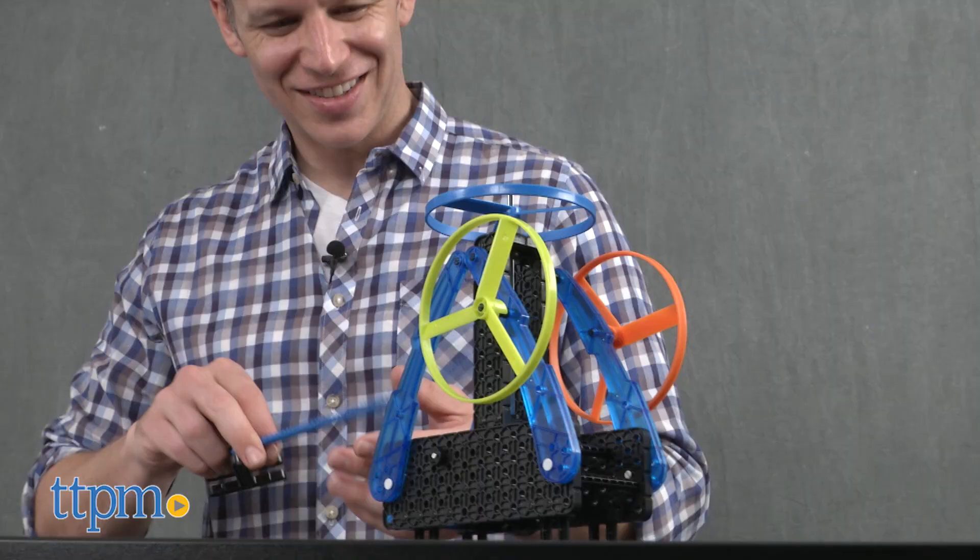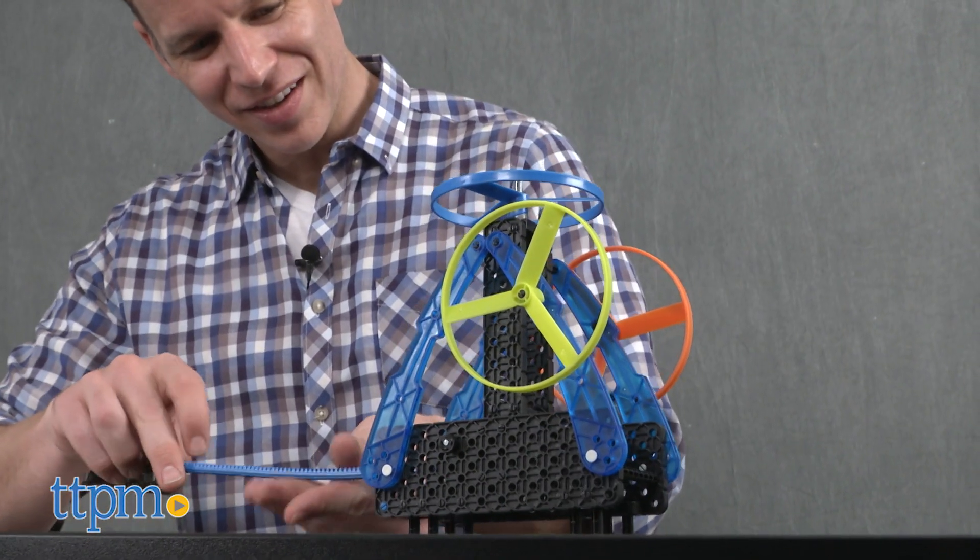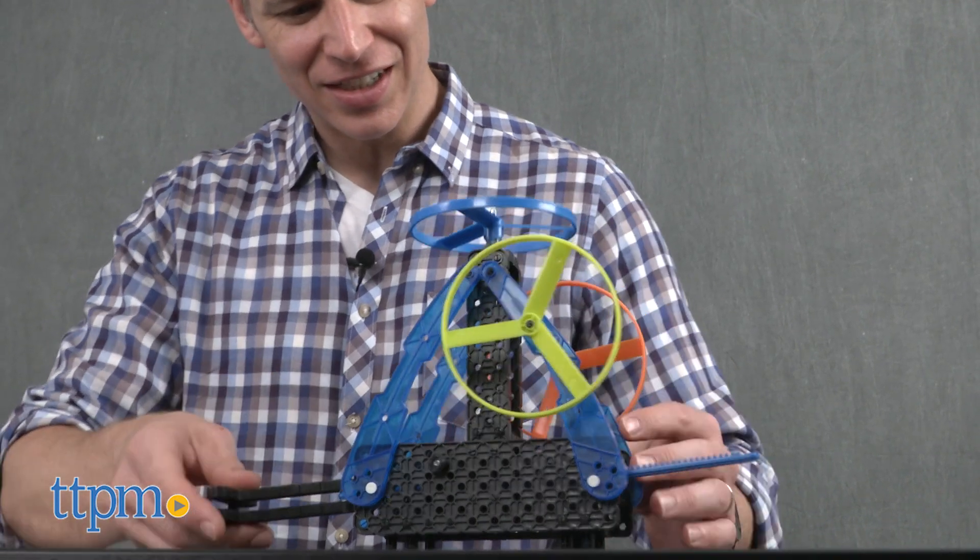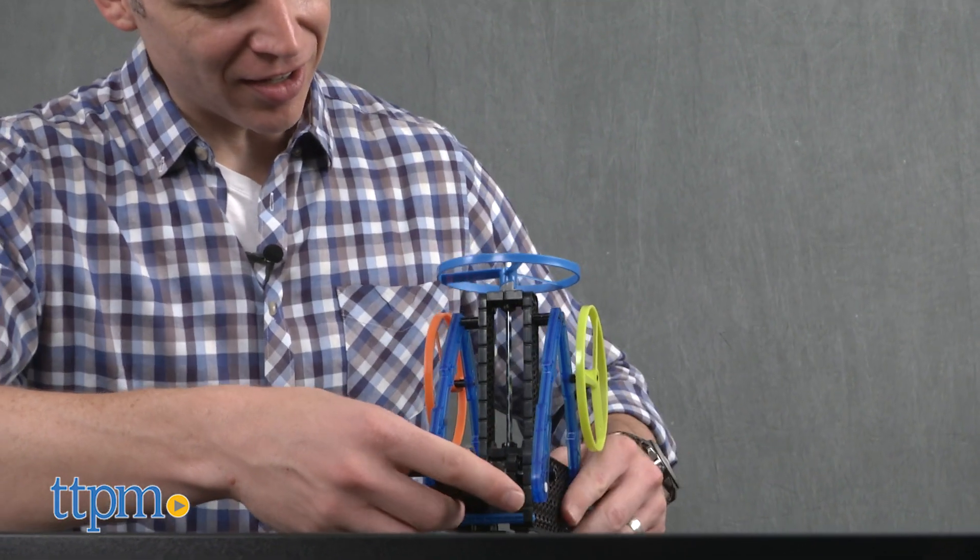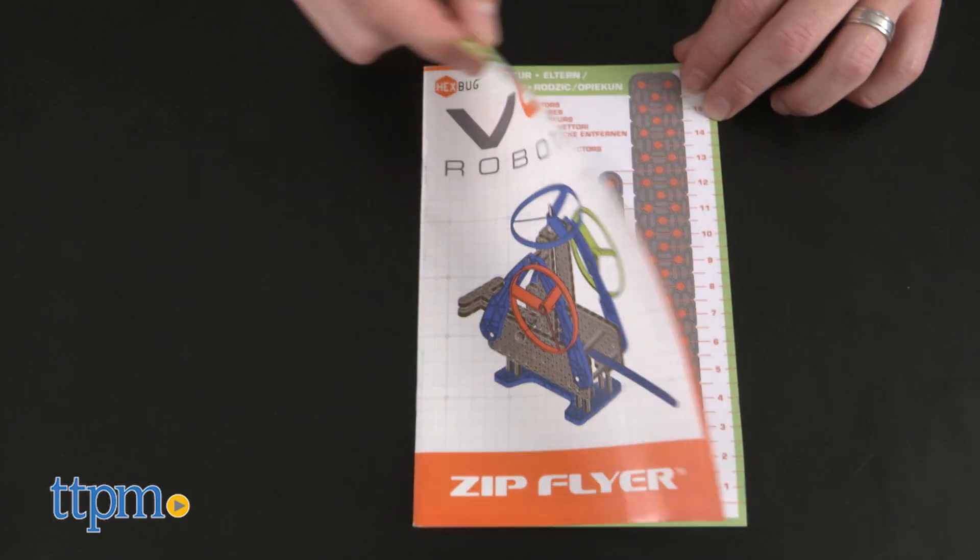When I was eight or nine, I had a toy like this. You pulled a string and the copter, in my case a Snoopy, took flight. I loved it so much I took it apart to see how it worked. Vex Robotics takes the guesswork out of it for curious kids like me because you build it.